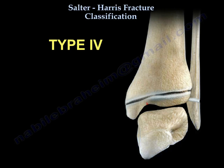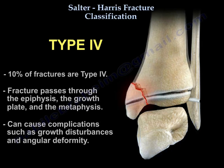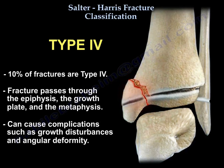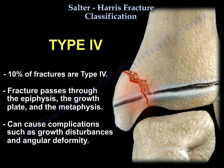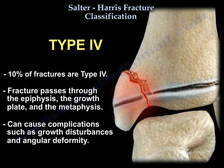Type 4 accounts for 10% of fractures. The fracture passes through the epiphysis, the growth plate, and the metaphysis. It can cause complications such as growth disturbances and angular deformity.